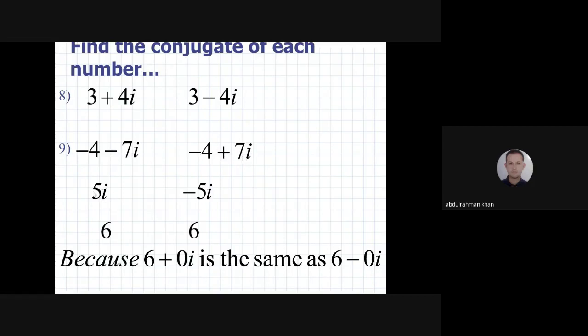For 5i, the imaginary part is 5i. The conjugate is minus 5i.